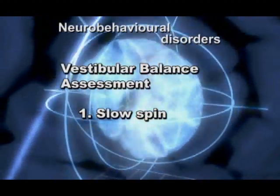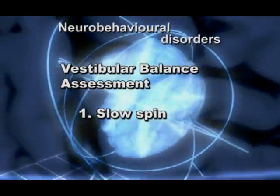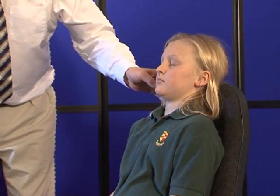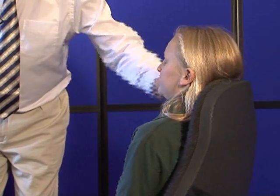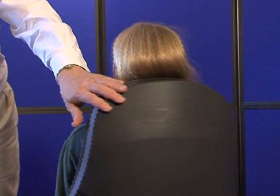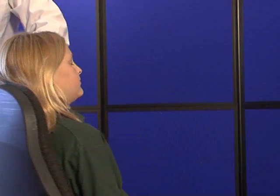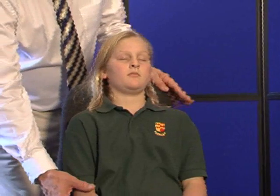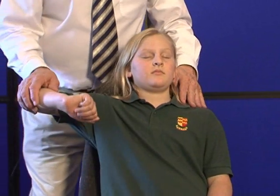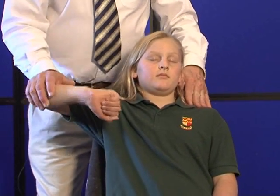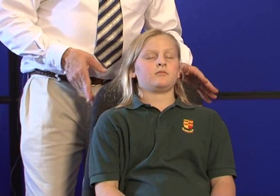Vestibular balance assessment — slow spin. Slowly spin in a swivel chair with eyes closed to the right or clockwise direction. Test a strong indicator muscle, in this case the deltoid on the right. If it weakens, it indicates an underactive right vestibular mechanism.